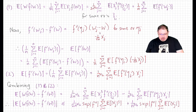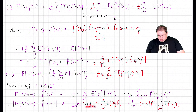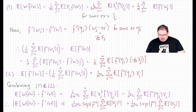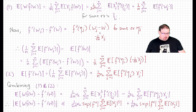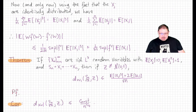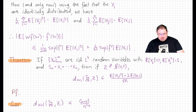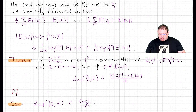That pretty much finishes the proof. The Stein term, which controls the Wasserstein distance between w and z, is bounded by a constant over n^{3/2} times a sum of terms of order n, giving 1/√n overall. In fact, identical distribution isn't even necessary — uniform boundedness of the first and third moments suffices. In the iid case, this simplifies to 1/(2√n) times sup|f''| times E[|X₁|³] plus a term with E[|X₁|], proving the Wasserstein version of the Berry-Esseen theorem.